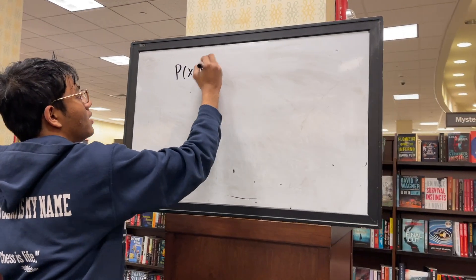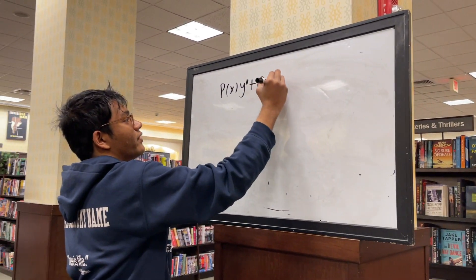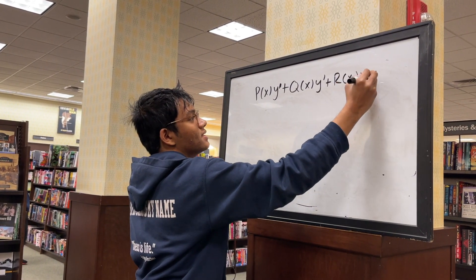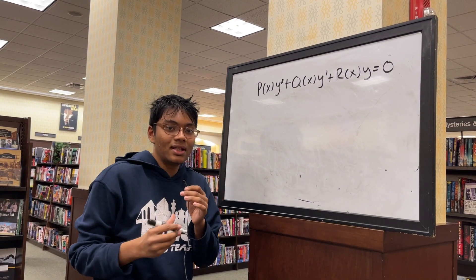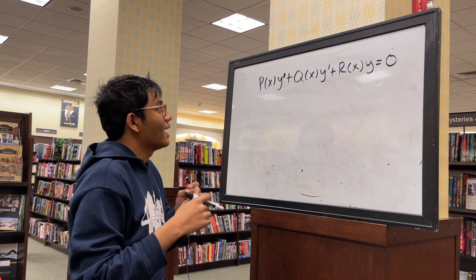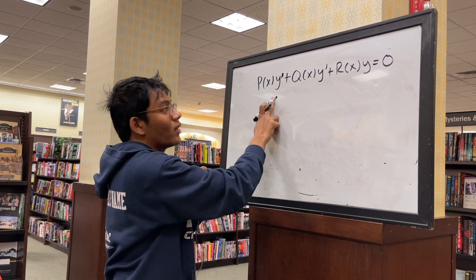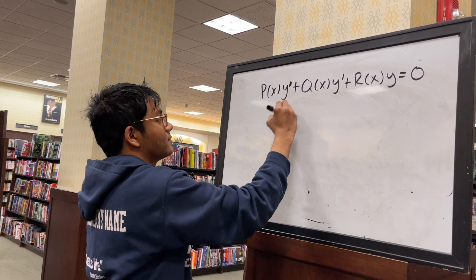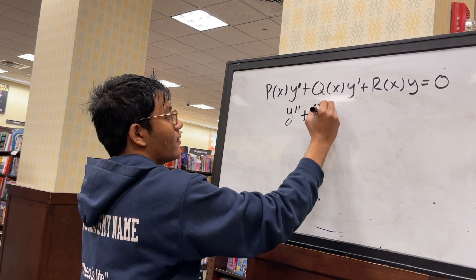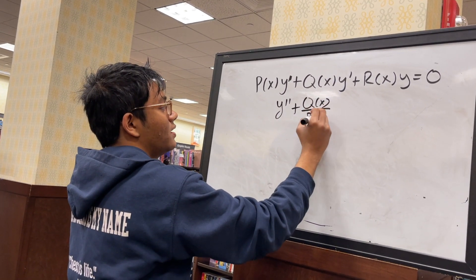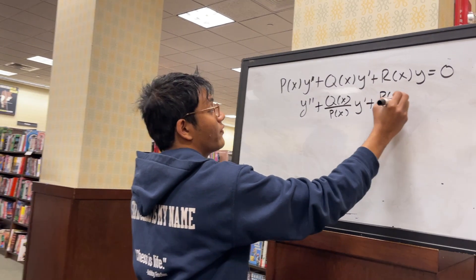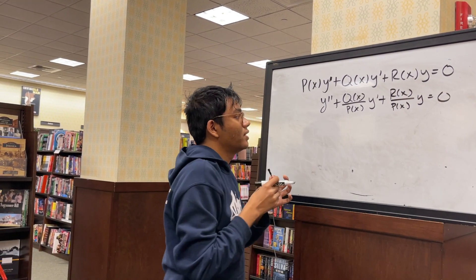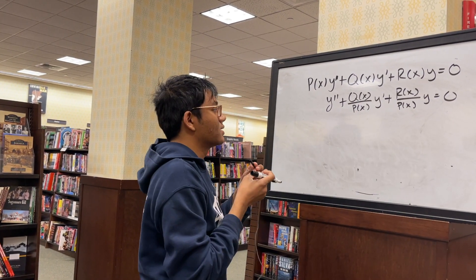We have a homogeneous linear ODE: p(x) y'' plus q(x) y' plus r(x) y equals 0. I want a 1 in front of my y double prime so I can execute the algorithm, so I divide through by p(x). That gives q(x)/p(x) times y' plus r(x)/p(x) times y, leaving polynomial coefficient terms.